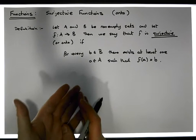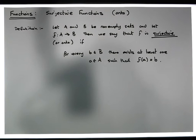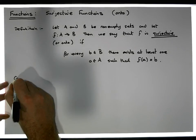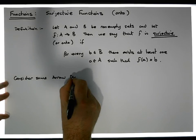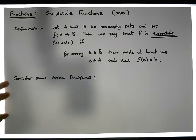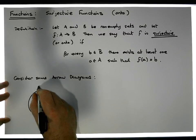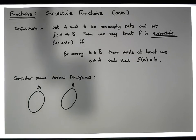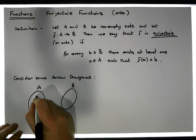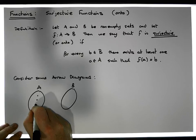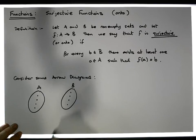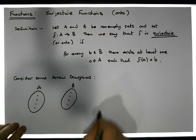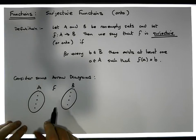To try to exemplify what's going on, let's have a look at some arrow diagrams. Let's say we have a set A and a set B. Set A has four elements — one, two, three, four — and set B also has four elements. The cardinality of both sets is four.